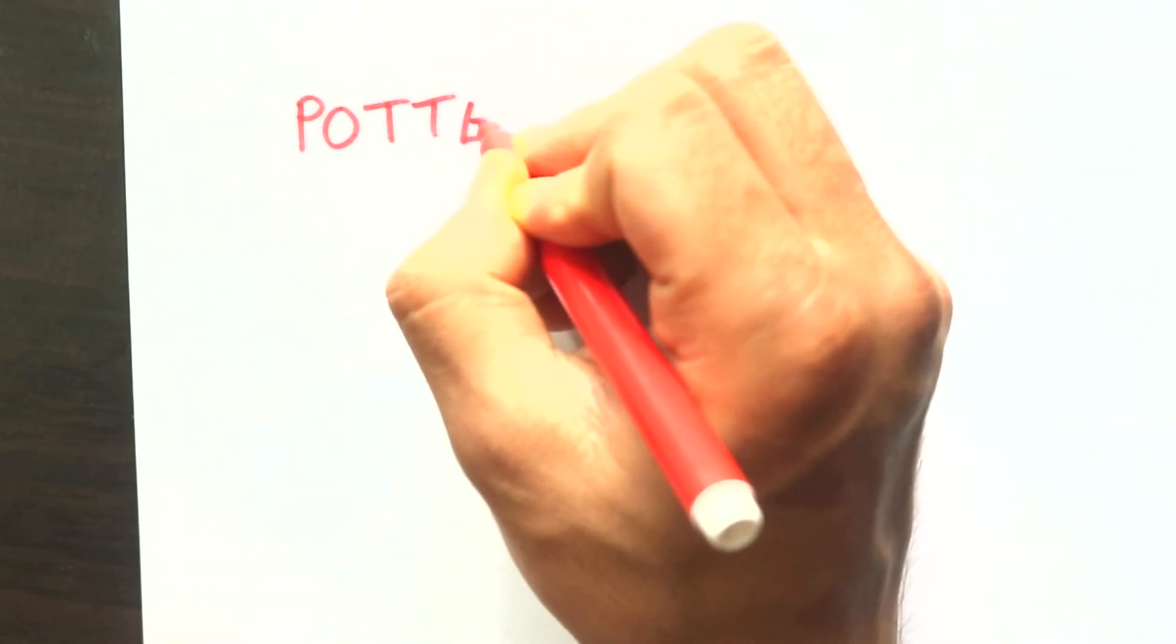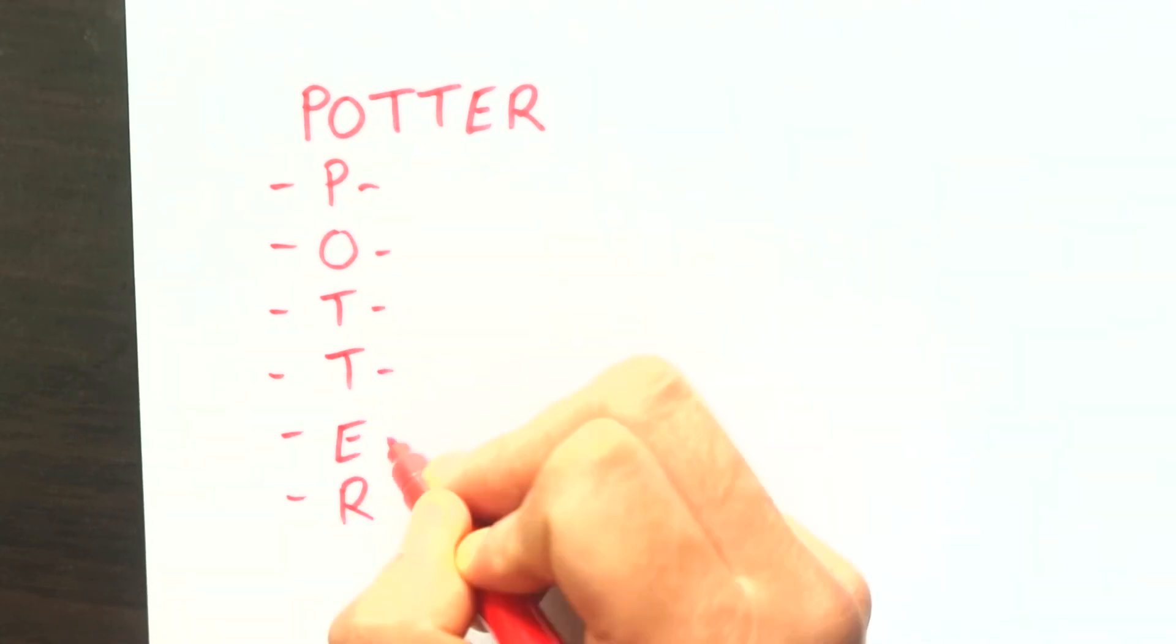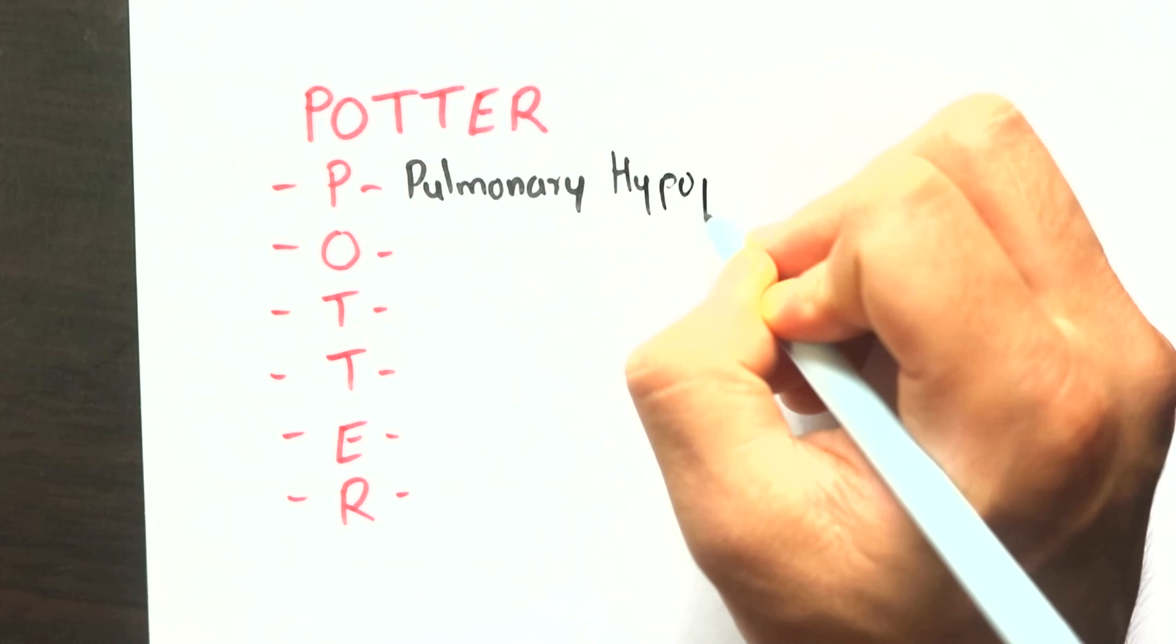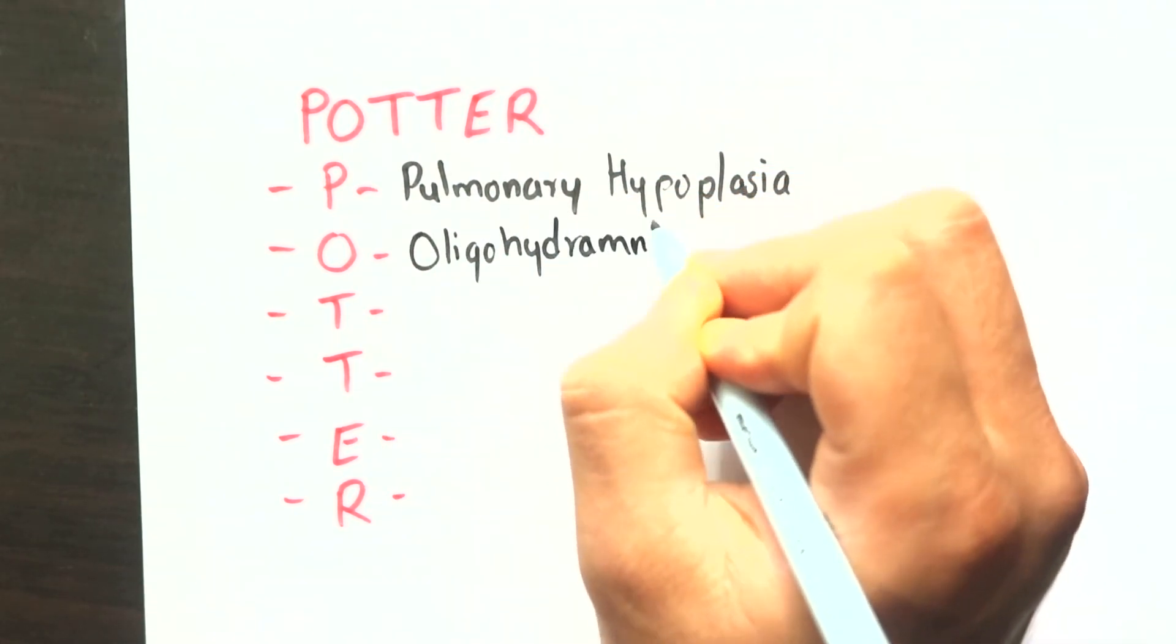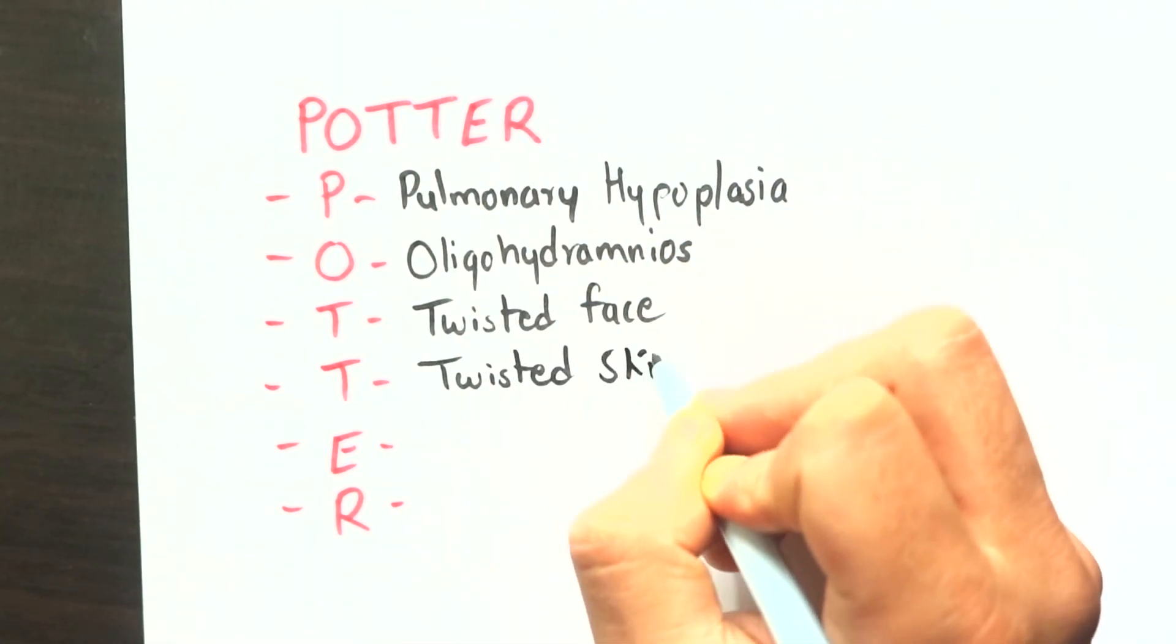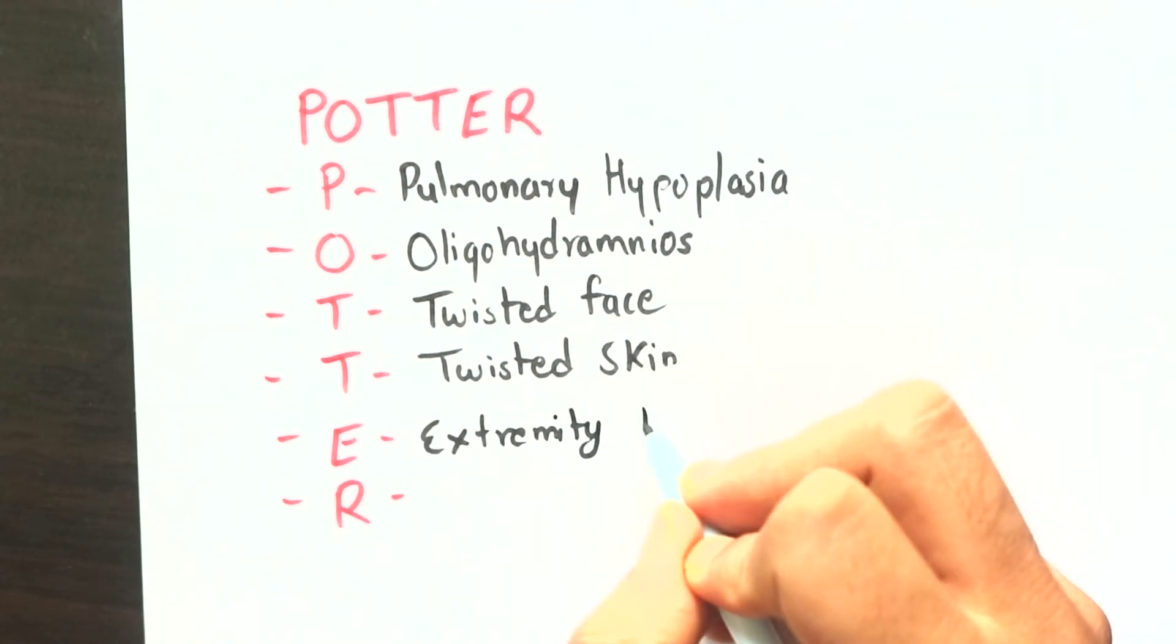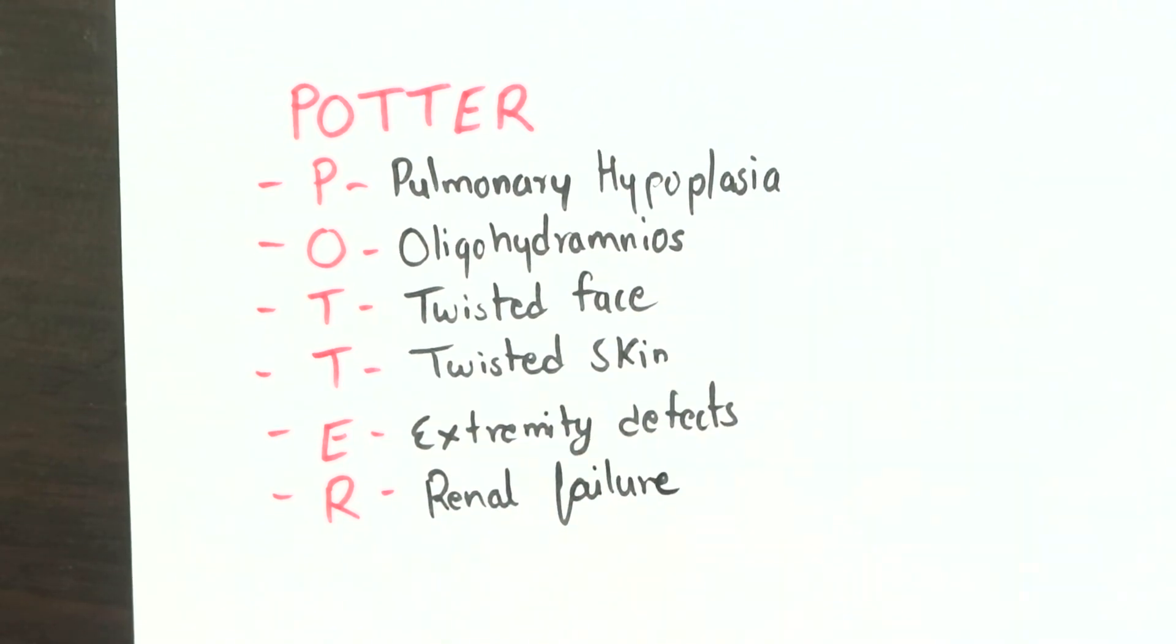There's a very nice mnemonic to remember the features of Potter syndrome and it is POTTER. P stands for pulmonary hypoplasia. O for oligohydramnios, which is the trigger. T stands for twisted face or Potter's facies. Another T for twisted skin - the skin appears wrinkled. E for extremity defects, and R for renal failure.